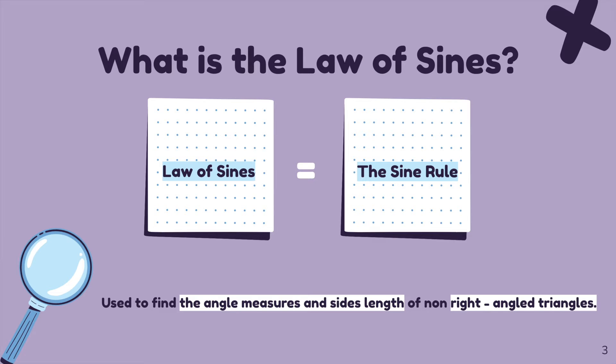For example, if you want to find out the angles or size of a mystery triangle, you have to ask yourself first if it is a right angle triangle or not. If it is, you might have to use Pythagoras theorem or SOHCAHTOA. On the other hand, if it is not a right angle triangle, you can use the law of sines.